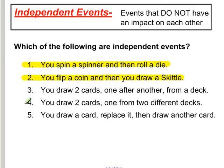Number four: you draw a card from two different decks — those are independent events, because it's two separate decks. It doesn't matter what I draw from the first deck; the second deck is still the same 52 cards. Number five: you draw a card, replace it, and then draw another card. When you replace things — and this is a key word in probabilities — you basically reset back to normal, so the next draw is the same as the first. Those are independent events; they do not change the outcome the second time.